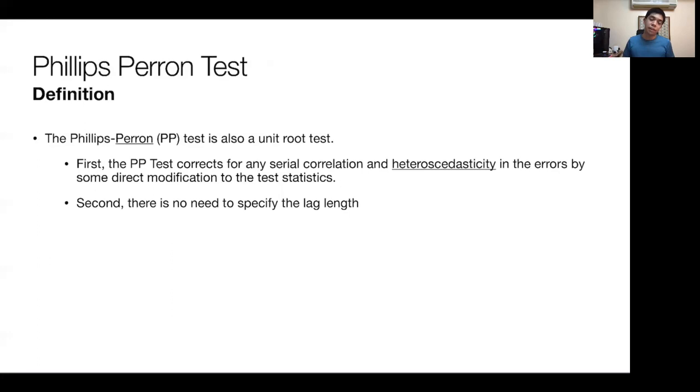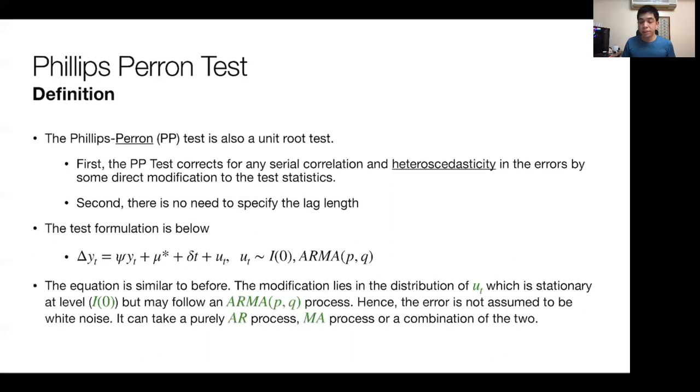Second, there is no need to specify the lag length, which is again one of the main criticisms of the DF and ADF test. The way the test is formulated is using an ARMA process, using some linear combination of both moving average terms and autoregressive terms as a way to model the error term.